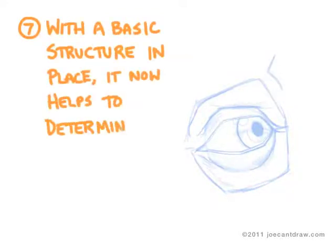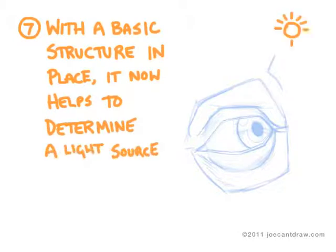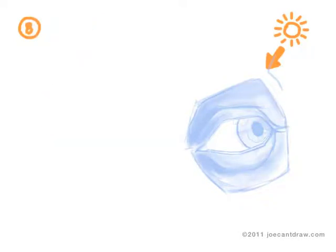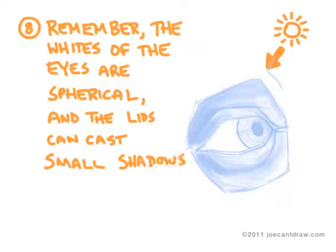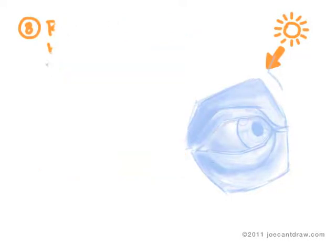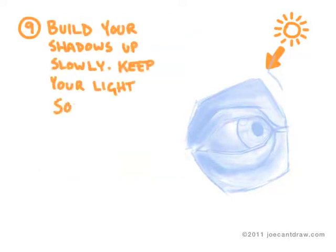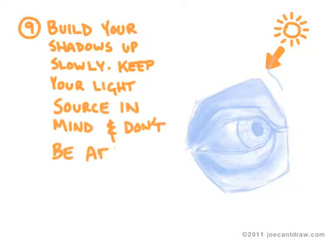So with the basic structure in place, it now helps to determine a light source. With that light source established, it's going to be much easier to imagine light moving across the forms and different forms casting shadows. And remember, the whites of the eyes are spherical. So build your shadows up slowly, keep your light source in mind, and don't be afraid to erase.